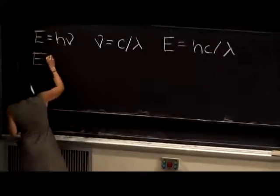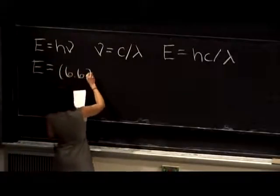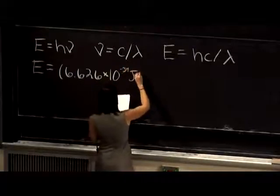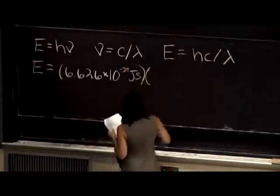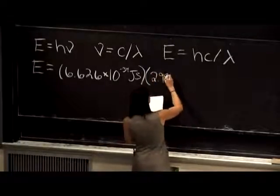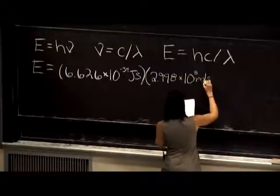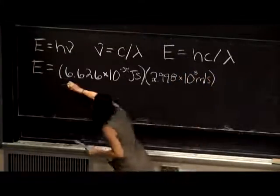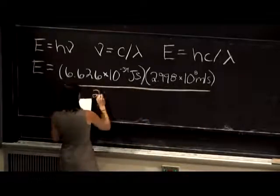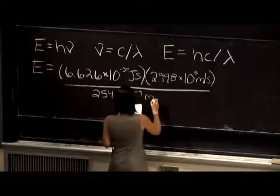So let's just plug in these numbers here. That means our energy is equal to 6.626 times 10 to the negative 34 joules times seconds. And then we have c, the speed of light, 2.998 times 10 to the eighth meters per second. And we want to divide all of that by our wavelength. To keep our units the same, we'll do meters. So that's 254 times 10 to the negative 9 meters.